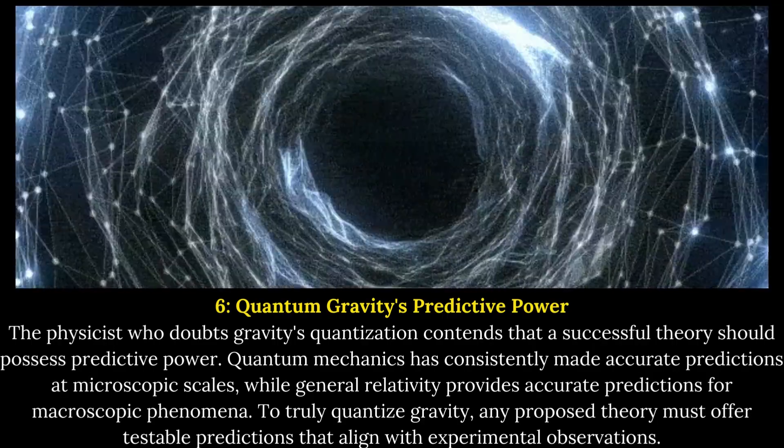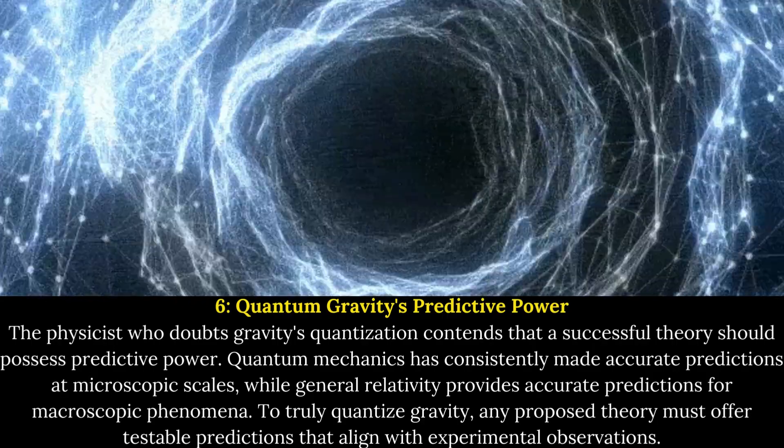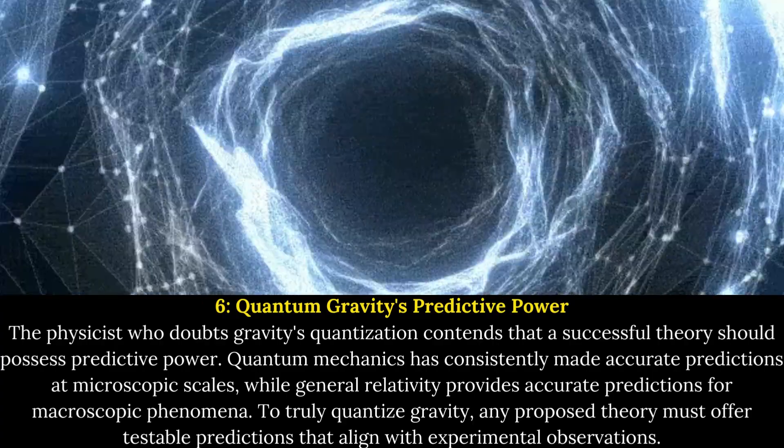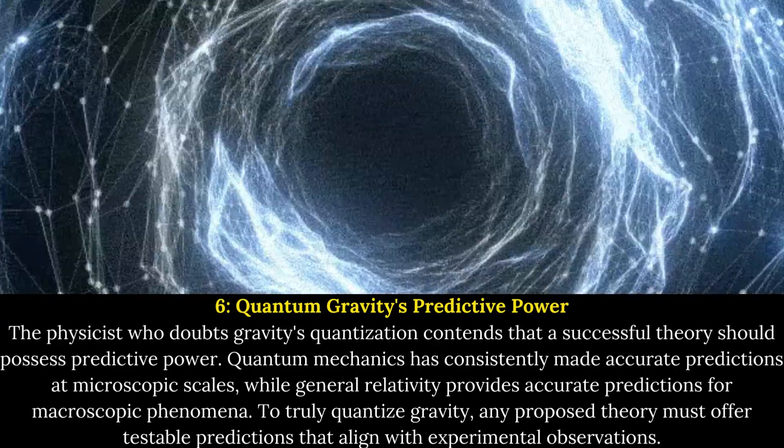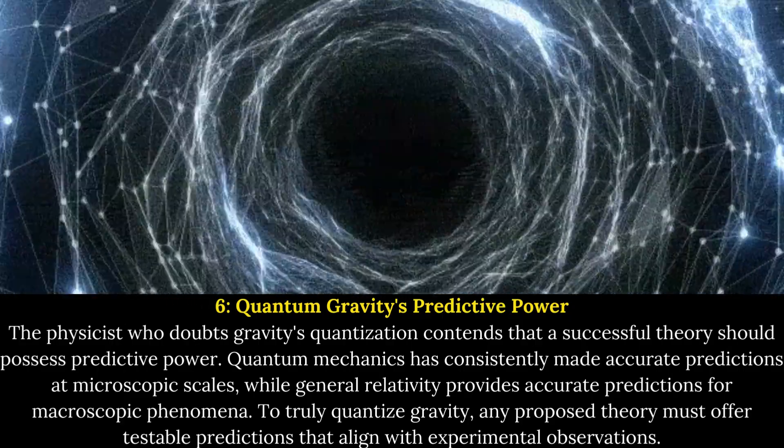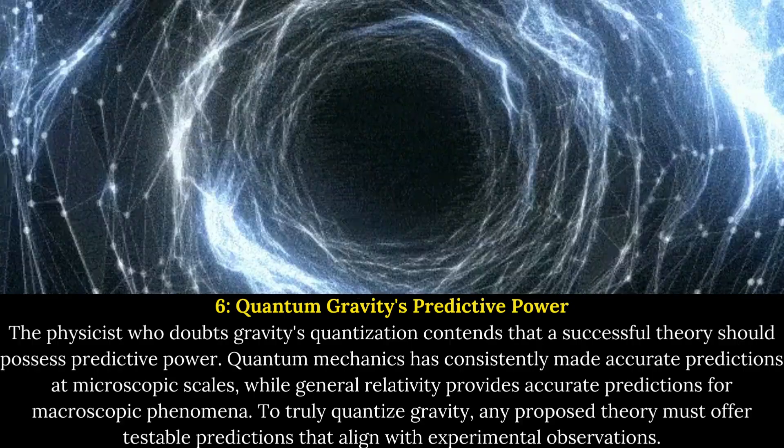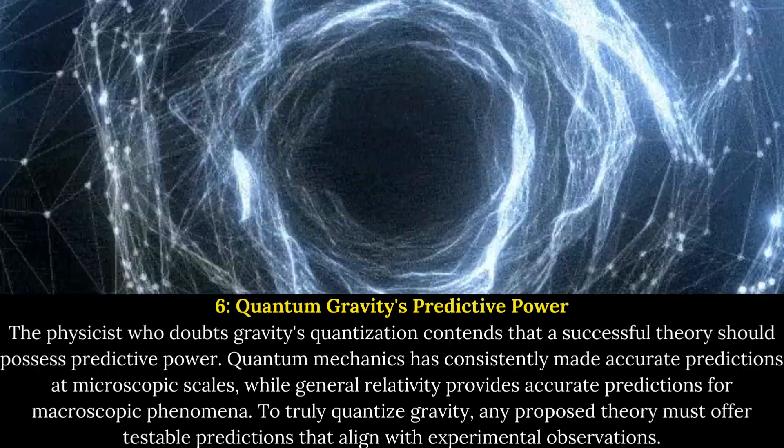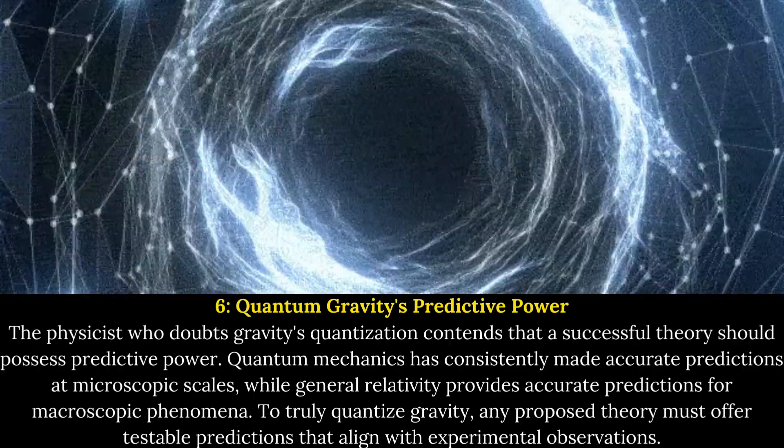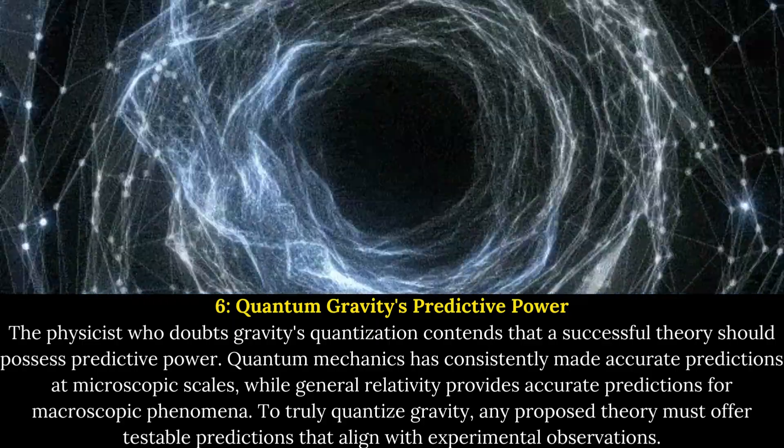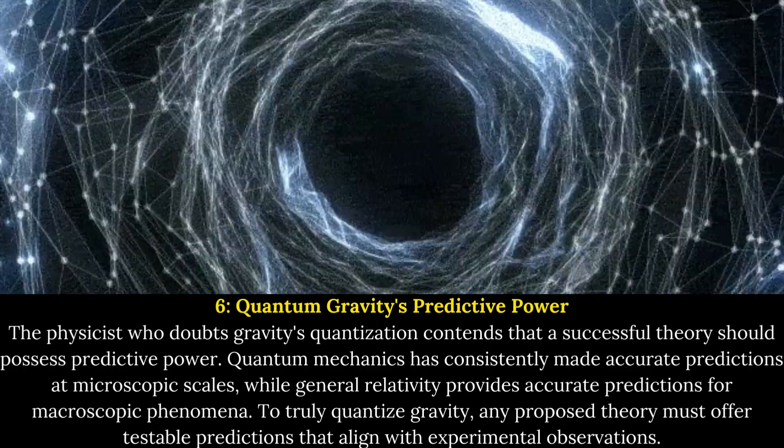Quantum gravity's predictive power. The physicist who doubts gravity's quantization contends that a successful theory should possess predictive power. Quantum mechanics has consistently made accurate predictions at microscopic scales, while general relativity provides accurate predictions for macroscopic phenomena. To truly quantize gravity, any proposed theory must offer testable predictions that align with experimental observations.